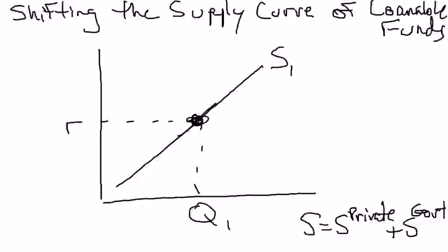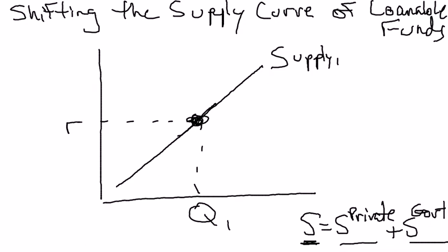Think of S as national savings. To be more precise, I'll call it Supply 1, where S is national savings. There are two components of national savings: there's private savings by people like you and me — in other words, households — and there is government savings.